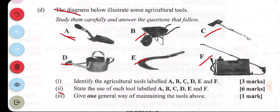Part ii asks us to state the use of each tool labeled A to F. A is used for digging garden soil. B is used for transporting debris from the farm to be disposed. C is used for cutting branches of trees. D is used for watering. E is used for harvesting grass or rice. F is used for spraying insecticides or fertilizers onto crops. Part iii: one way of maintaining these tools is to clean and store them after use.